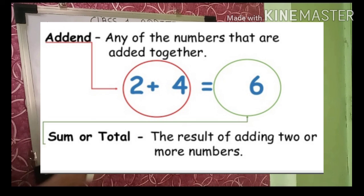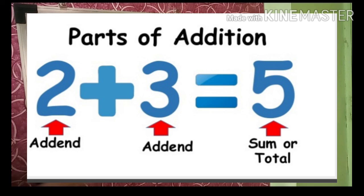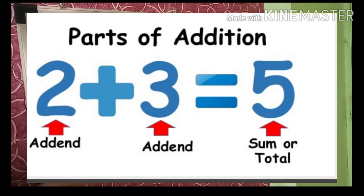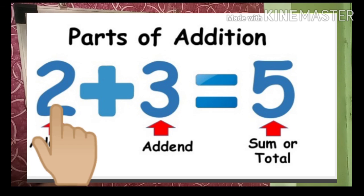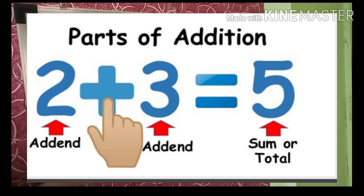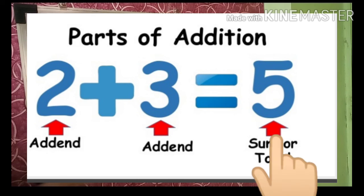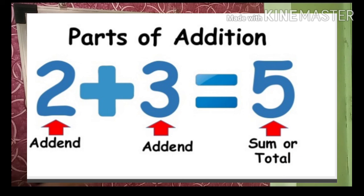The parts of addition are: addend, plus sign, addend equals sum. So the parts of addition are addend, plus sign, and sum. See you in the next video.